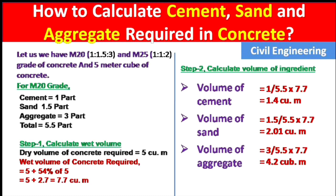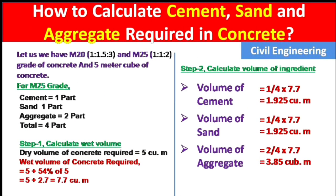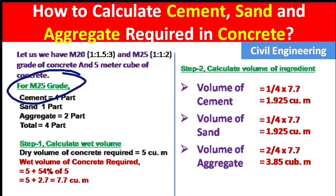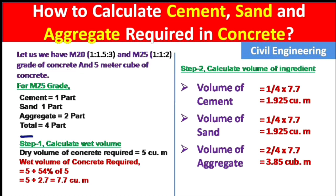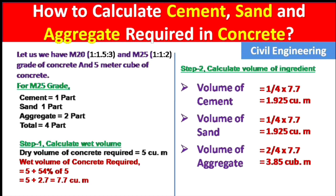Now let us calculate the total ingredients for M25 grade of concrete. The same procedure applies, but the difference is that for M25 grade of concrete the mix ratio is 1:1:2 — one part cement, one part sand, and two parts aggregate. Adding all values, the total parts will be 4.